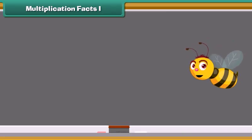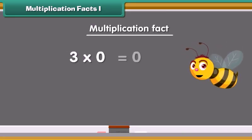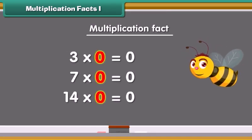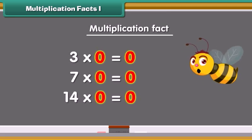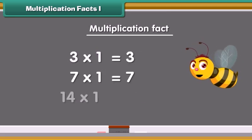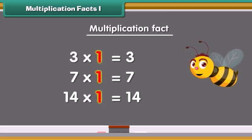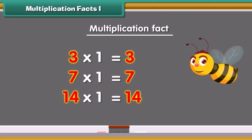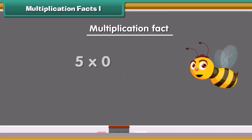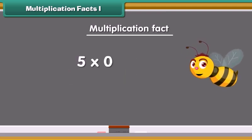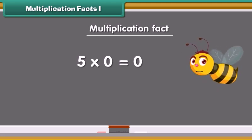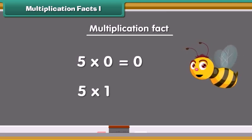We start with some multiplication facts. Any number multiplied by 0 is always equal to 0. A number multiplied by 1 is equal to the same number. Example: 5 multiplied by 0 is 0, 5 multiplied by 1 is 5.